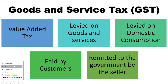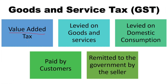What is the meaning of GST? GST is a value added tax, which is added to the value of the product. It is levied on goods and services — the tax is charged on goods and services.